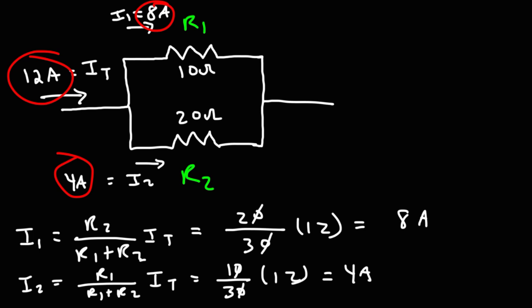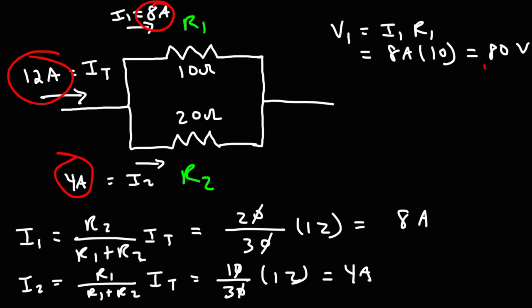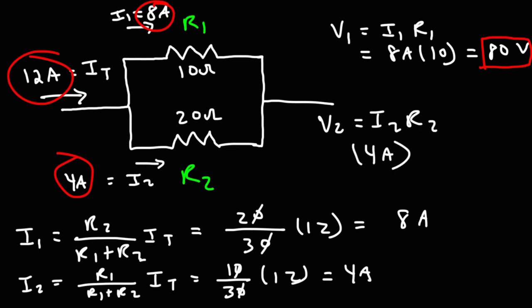Now that we know the current through each resistor, we can calculate the voltage across them. Since the resistors are in parallel, the voltage should be the same across both. V1 = I1 × R1 = 8A × 10Ω = 80 volts. V2 = I2 × R2 = 4A × 20Ω = 80 volts. The voltages are equal, confirming that resistors in parallel always have the same voltage across them.